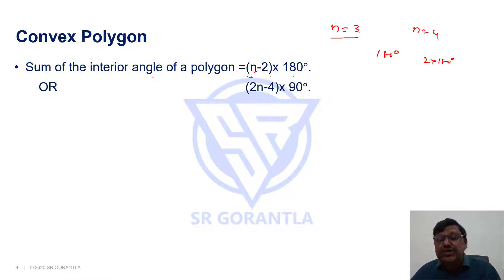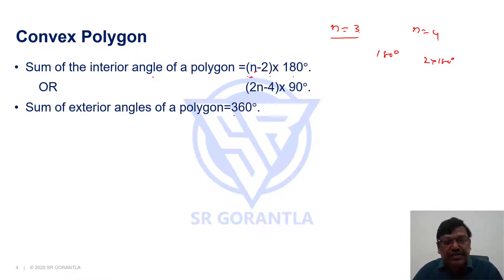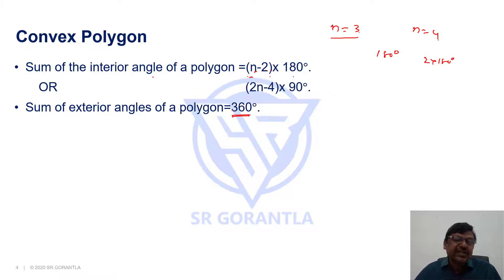This is the formula for the sum of interior angles of a polygon. The sum of exterior angles for any polygon is always 360 degrees — whether it is a three-sided, four-sided, or five-sided polygon, the sum of exterior angles is always 360 degrees.